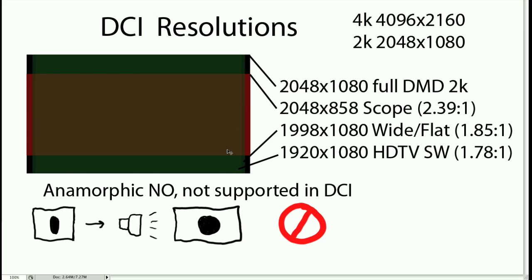If we look at this frame here, we can see the outside diameter is the full DMD, or full 2K DLP chip. There are two types of content displayed in DCI used in typical film. One is called scope, which is 2.39 to 1. The other is called wide, flat, or close to 16 by 9 — it's a little bit different — that's 1.85 to 1. And the standard HD we know is 1920 by 1080.